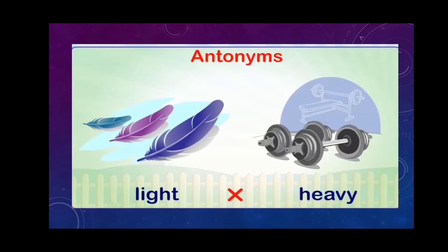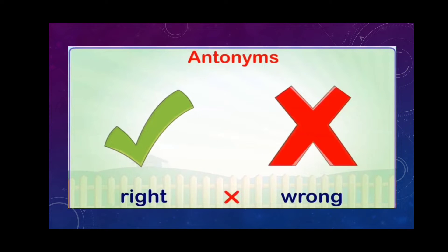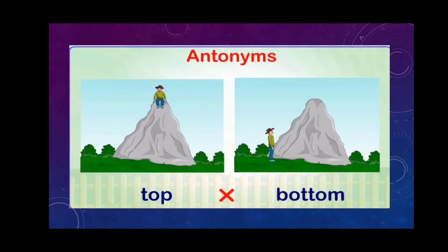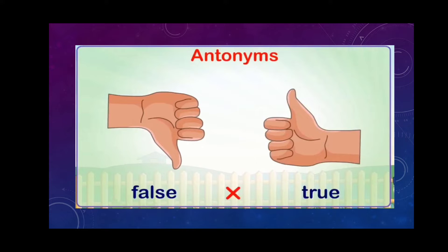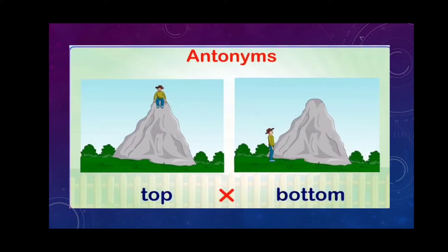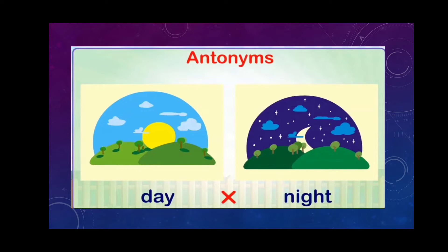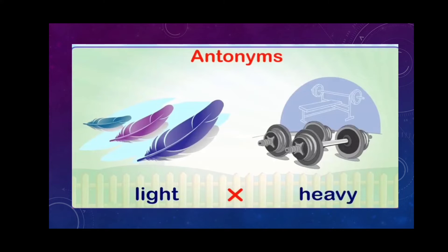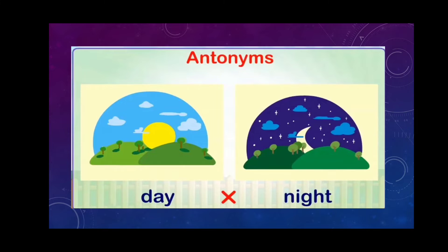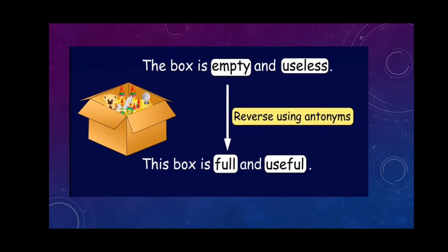Let us see with examples: light-heavy, right-wrong, day-night, top-bottom, false-true. These are all examples of antonyms which have opposite meanings. Like false, the opposite meaning is true. Top, opposite is bottom. Day, opposite is night. Right, opposite is wrong. And light, opposite is heavy. These are all examples of antonyms which have opposite meaning.